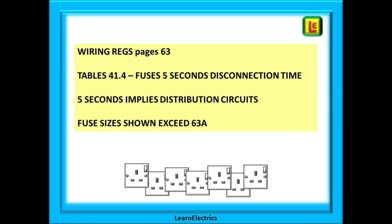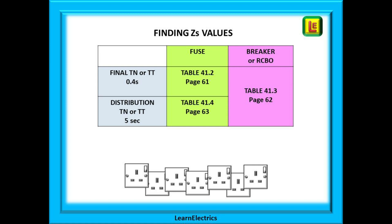On page 61 we find the table for fuses specifically for 0.4 second disconnection times, implying final circuits — notice that fuse sizes shown do not go past 63 amps on this table. On page 63 we find table 41.4 for fuses again, but specifically for distribution circuits with five second disconnection times, and on this table the fuse sizes do go past 63 amps.